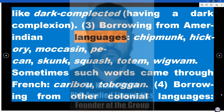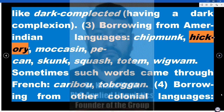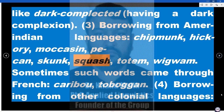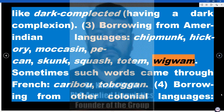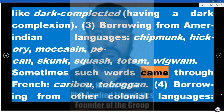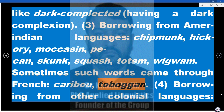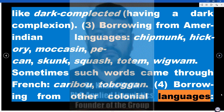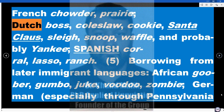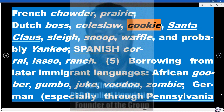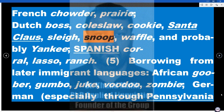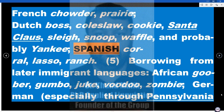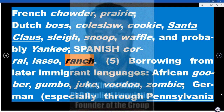3. Borrowing from Amerindian languages: chipmunk, hickory, moccasin, pecan, skunk, squash, totem, wigwam. Sometimes such words came through French: caribou, toboggan. 4. Borrowing from other colonial languages — French: chowder, prairie; Dutch: boss, coleslaw, cookie, Santa Claus, sleigh, snoop, waffle, and probably Yankee; Spanish: corral, lasso, ranch.